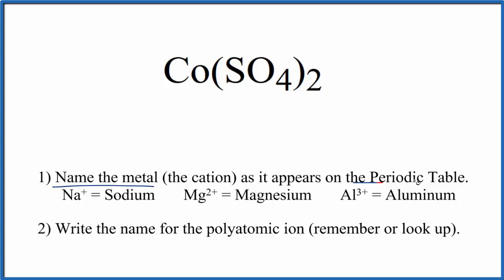First, we'll name the metal as it appears on the periodic table. That's just cobalt. Next, we'll write the name for the polyatomic ion. So SO4, this is the sulfate ion.